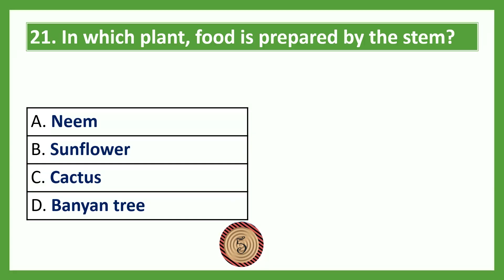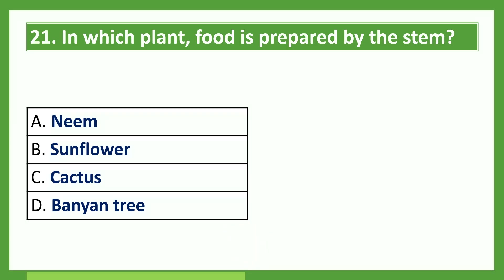In which plant is food prepared by the stem? Option A: neem; Option B: sunflower; Option C: cactus; Option D: banyan tree. The answer is Option C, cactus.